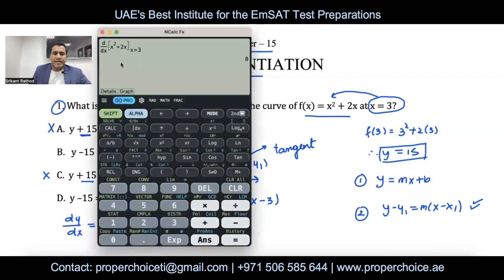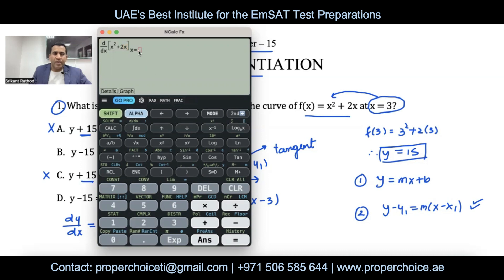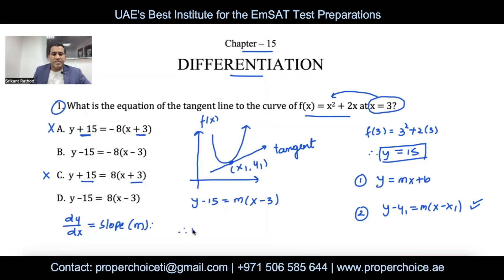To find the derivative, use the calculator's d/dx function — press Shift, then the integral sign button. Type the function as: alpha x² + 2·alpha·x, at x = 3. The calculator gives dy/dx at x = 3 as 8. So the slope m = 8. Substituting back: y − 15 = 8(x − 3), which matches option D.